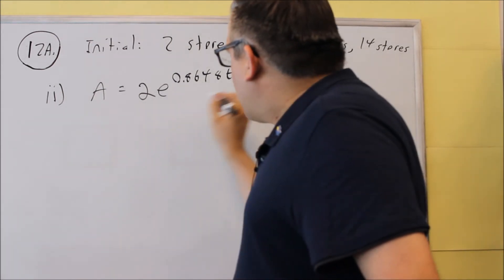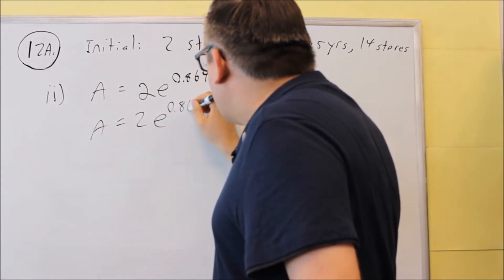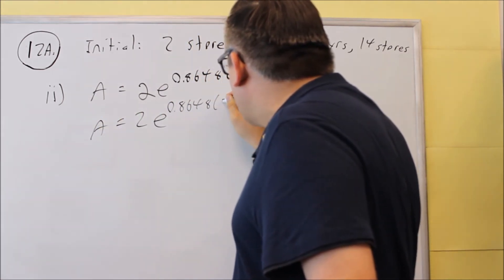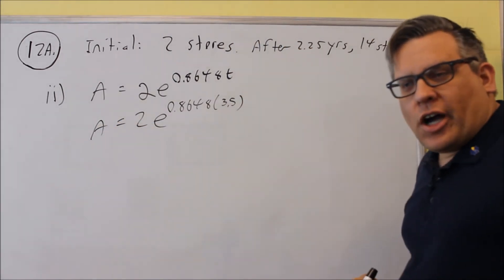So that means we're going to put 3.5 in for t. So we have 2e^(0.8648 times 3.5), because that's what they're giving us in double I.